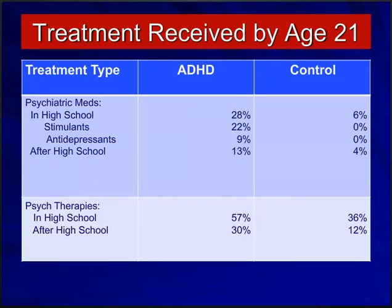By age 21, the vast majority of ADHD children were no longer receiving treatment, nor had they done so during their high school years, particularly with regard to medications. Only about one in four ADHD children was receiving medication in high school, mostly stimulants. After high school by age 21, this rate had fallen to only about one in seven — about 13%. Although some had received additional psychological therapies during high school or special educational services, after high school only about 30% had received any form of such therapy.